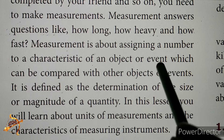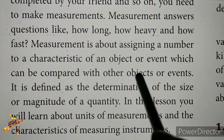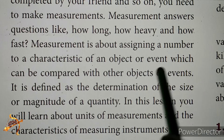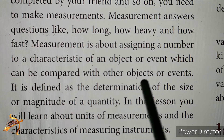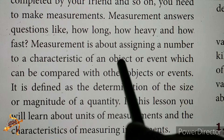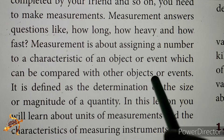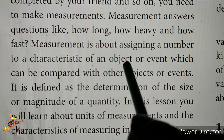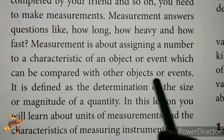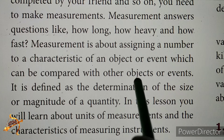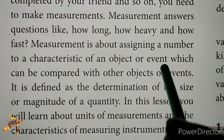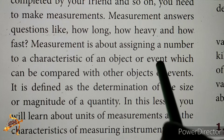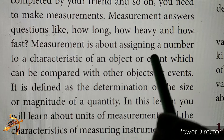This is an event — a running race. In the running race, time is a characteristic. If you look at the example, you can see which characteristic can be compared with other objects or events. We measure the length of a pencil, and in the running race, the time will be compared.